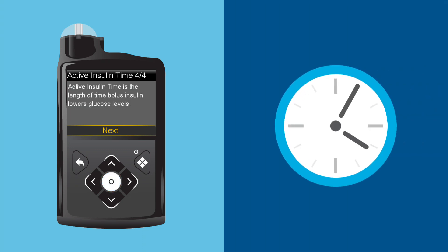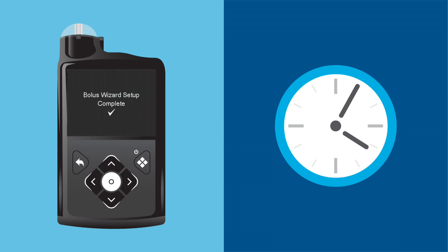Active Insulin Time is the final setting. This is the amount of time that Bolus Insulin from previous Boluses is still working to lower blood glucose. Andy selects Next. He selects Duration to set the time. Andy presses Select twice to save the settings. The Bolus Wizard setup is complete.